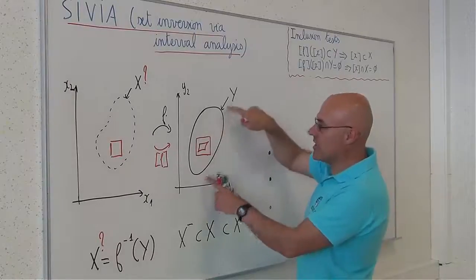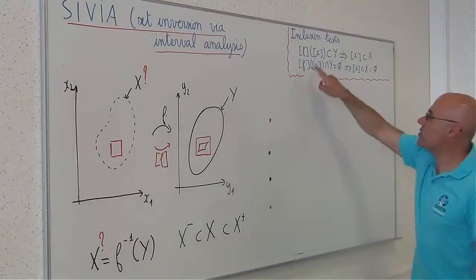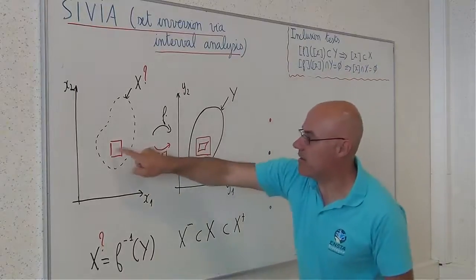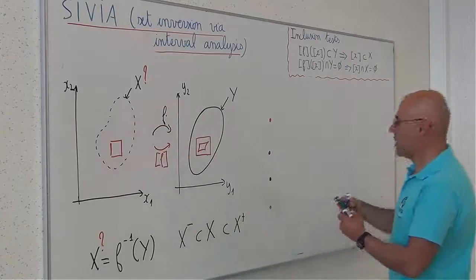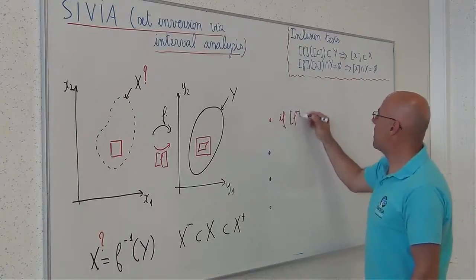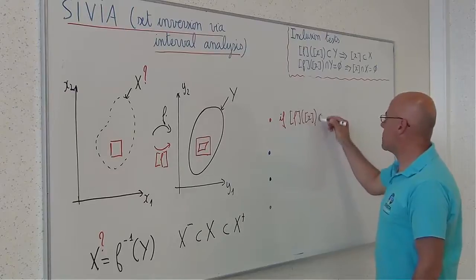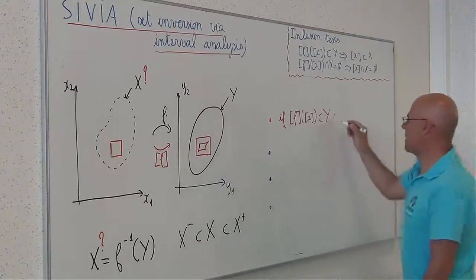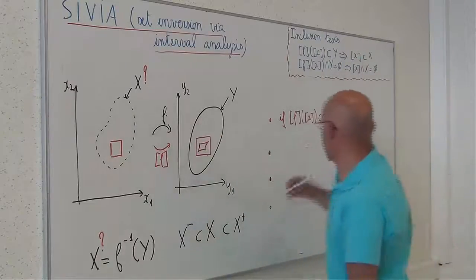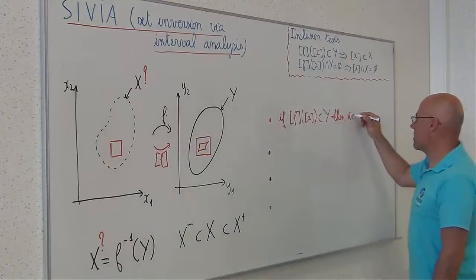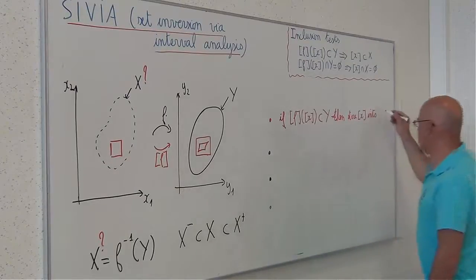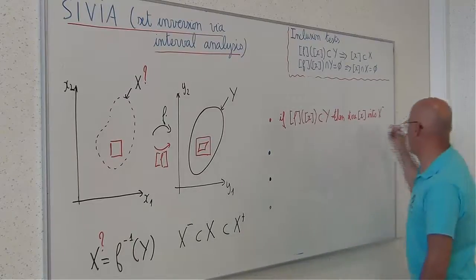Since the resulting box is inside y, I know because of this inclusion test that this box will belong to x. So it means that if f of x is a subset of y, as here, then x is inside x. And I will store this box into x minus and also into x plus.